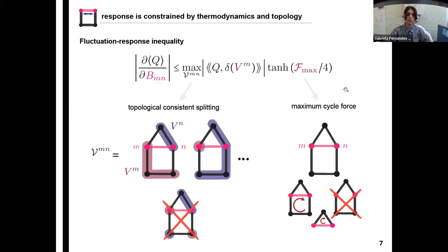And this is exactly what our main result tells us, which is a fluctuation response inequality that's telling us that the response of the observable to changes in the energy barrier depends on two different terms. One is a topological term, another one is related to thermodynamic driving. So for the thermodynamic driving part, what counts is the maximum cycle force, which is the maximum cycle force over all cycles that contain the perturbed edge, in this case M and N. And over here for the topology term, what we are interested in is a structure called the topological consistent splitting, which is the splitting between the states of the system in two different subsets, one that contains states M and the other that contains states N. And the splittings, they need to be consistent with the topology of the system.